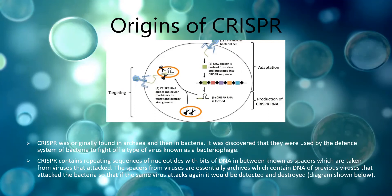CRISPR contains repeating sequences of nucleotides with bits of DNA in between, known as spacers, which are taken from the viruses that attacked. The spacers from the viruses are essentially archives which contain DNA of the previous viruses that attacked the bacteria, so that if the same virus attacks again, it would be detected and destroyed. This was demonstrated by a team of researchers at a food ingredients company who used Streptococcus thermophilus as a model and saw that each time a bacteria cell survived a virus attack, it added the spacers of the virus into the CRISPR, which were identical to parts of the virus's DNA, showing how bacteria utilizes CRISPR as an effective means of fighting viruses.